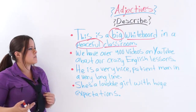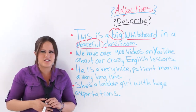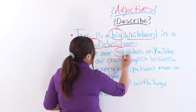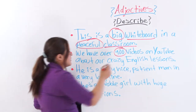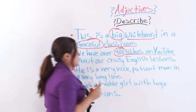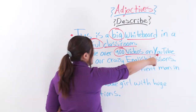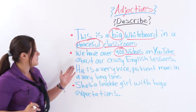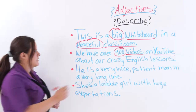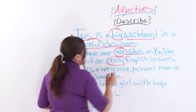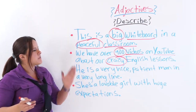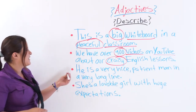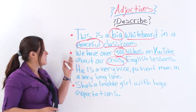The second example says: we have over 400 videos on YouTube about our crazy English lessons. '400' gives you more information about the videos on YouTube. 'Crazy' is another adjective that describes our English lessons. So those are the two adjectives used in this example.